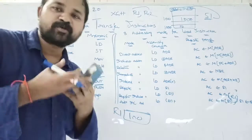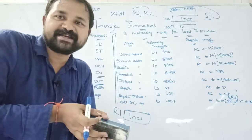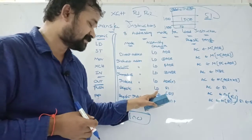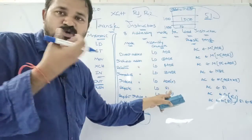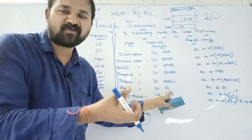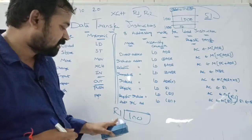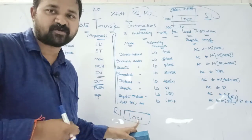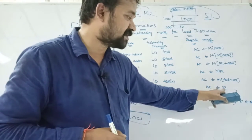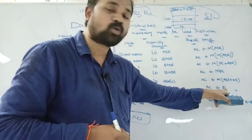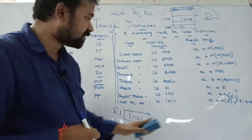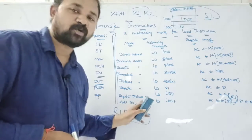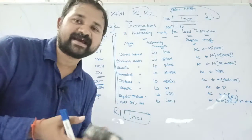Register addressing mode means the content of the register becomes the accumulator content. It is represented as 'LD R1', so the content of R1 is loaded into the accumulator. In register transfer notation: 'AC ← R1'. For example, if R1 contains 100, then 100 will be loaded into the accumulator.